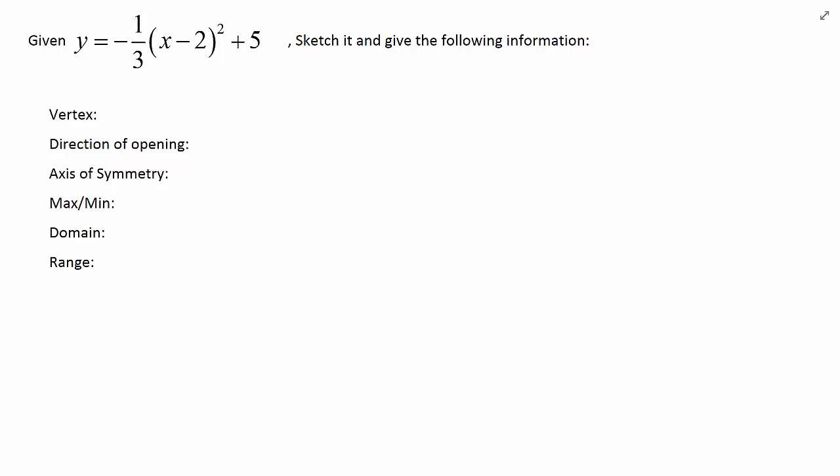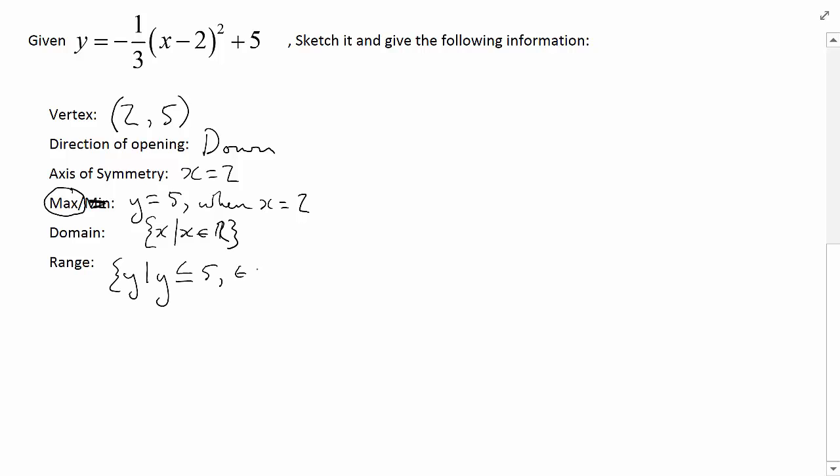For instance, I always know that the vertex is located at p comma q, and in this case, p is the value 2 and q is 5. I know that the direction of opening is downwards because we have a equal to negative 1 third. The axis of symmetry is x equals 2. Since the parabola is opening downward, it has a maximum value, not a minimum, and the maximum value is y equals 5, and this only occurs when x is equal to 2. What's the domain? The domain for these is always the set of all x values such that x is an element of the set of real numbers. And the range is the set of all y values such that y is less than or equal to 5 and is an element of the set of real numbers.